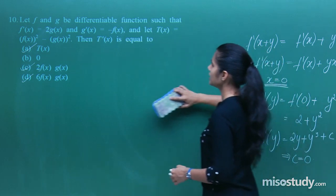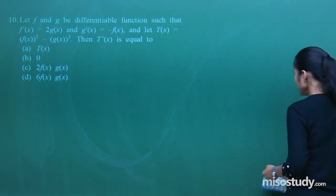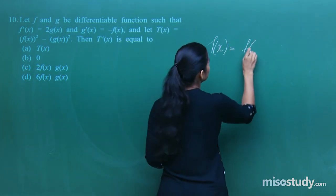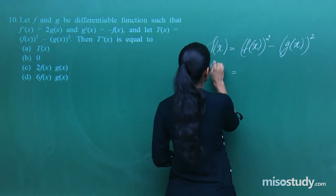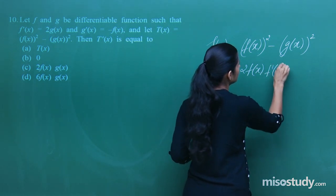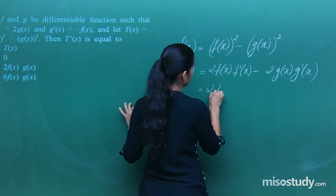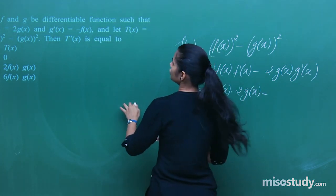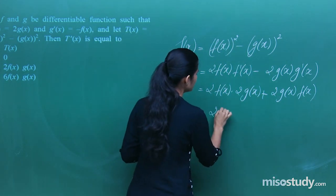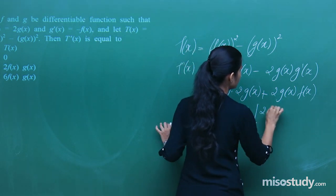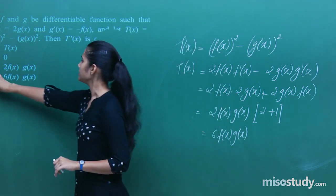Final question: f and g are differentiable with f'(x) = 2g(x) and g'(x) = −f(x). Let t(x) = f(x)² − g(x)². Then t'(x) = 2f(x)·f'(x) − 2g(x)·g'(x) = 2f(x)·2g(x) − 2g(x)·(−f(x)) = 4f(x)g(x) + 2f(x)g(x) = 6f(x)g(x). Revise all the questions nicely.